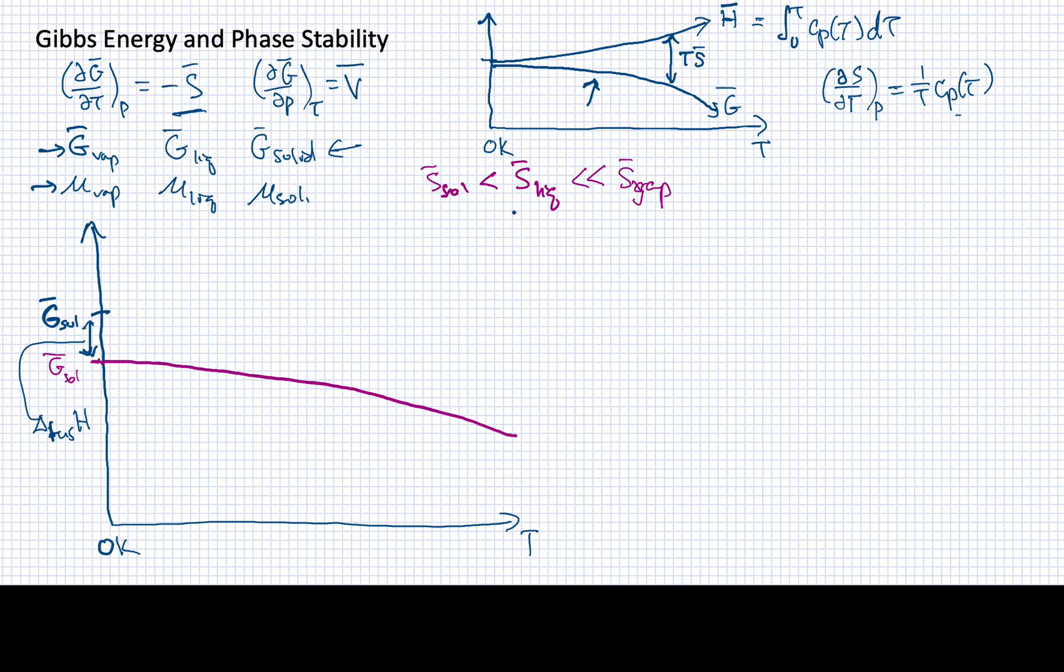All right, but we also know that because the entropy of the liquid is greater than the entropy of the solid, it's going to slope down faster. So even though I'm starting above, since this is going to slope down faster, I know at some point it's got to cross this solid line. It's got to cross as it goes down somewhere like here.